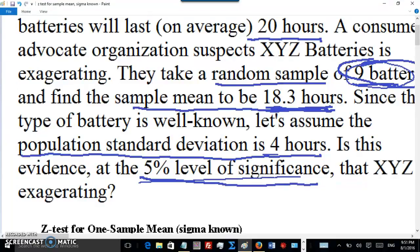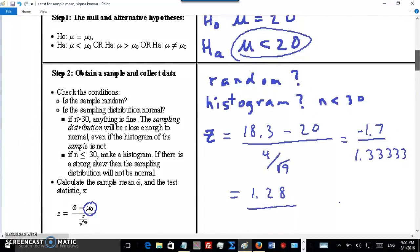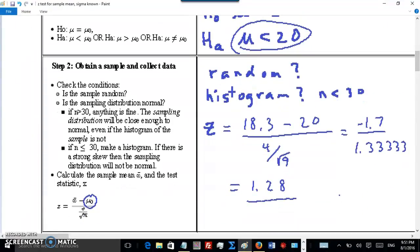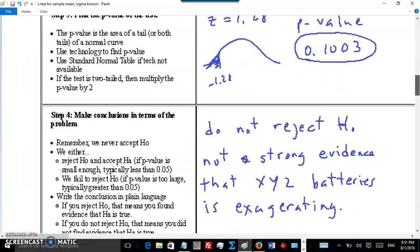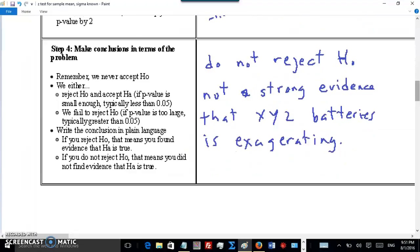Also, the standard deviation is pretty big, relatively speaking, 4 hours. There's a lot of variation in the individual batteries. Those two things combined gives us a pretty big standard error of 1.333, which gave us a pretty small Z-score. You could say there's a red flag that there's some evidence that the company is exaggerating. Maybe further research is needed, maybe a bigger sample, and maybe you might find evidence in the future. But as of right now, we'd have to say not enough evidence to claim that they are exaggerating. And that's it.